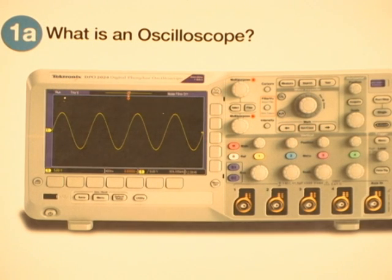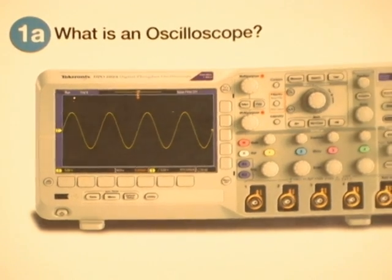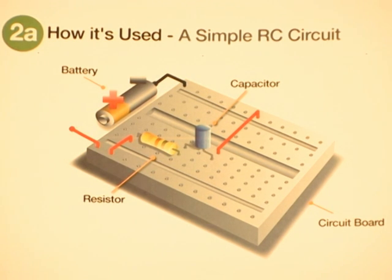So at its heart, an oscilloscope is a device for seeing how the voltage of a signal varies over time. For example, imagine a simple RC circuit with a battery, a capacitor, and a resistor.